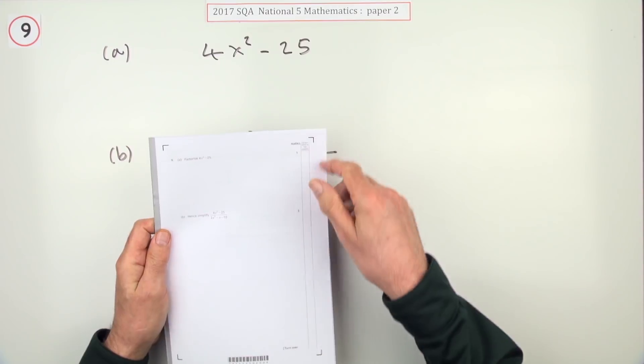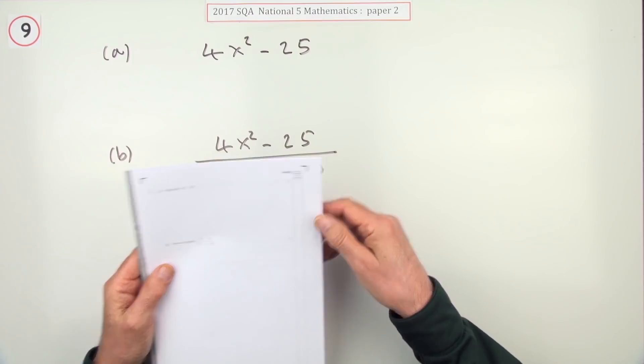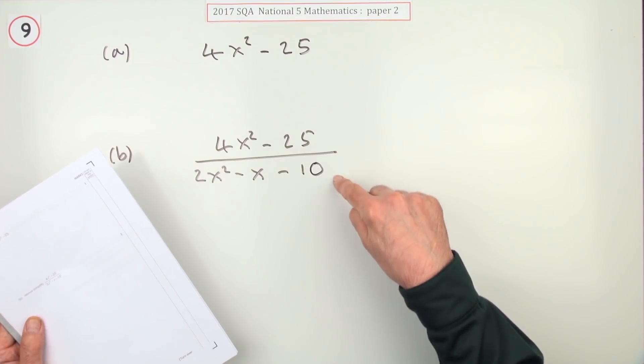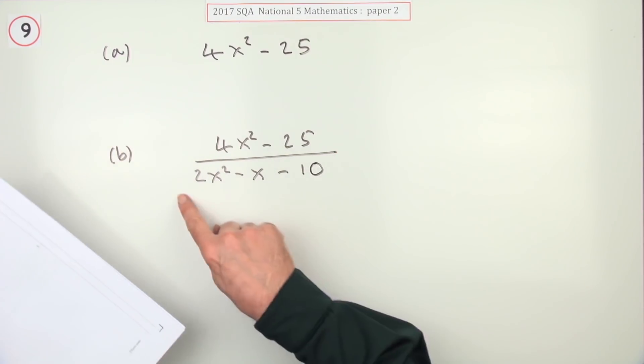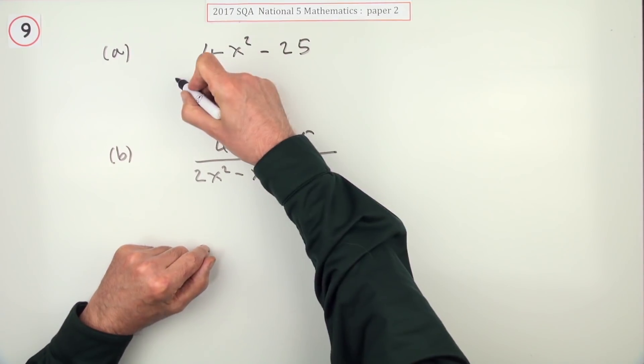Number nine from paper two of the 2017 National Five. There's four marks here. It's a factorization question. You've got an algebraic fraction to simplify. It could just have asked you this part but it's broken it into two parts for you.